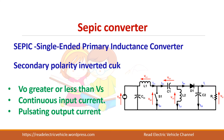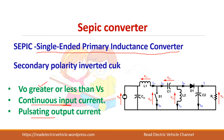Next is the SEPIC converter, which stands for Single Ended Primary Inductance Converter. It is also similar to a buck-boost converter and will give you a voltage greater or less than the input voltage. It has a continuous input current but the output current is pulsating.